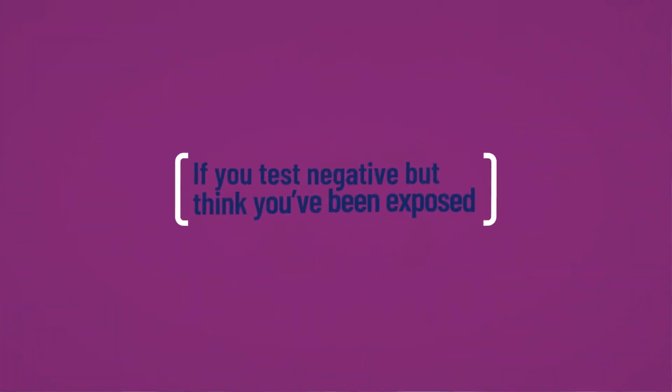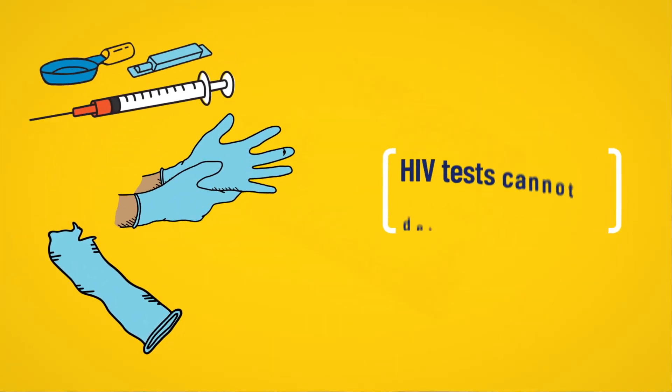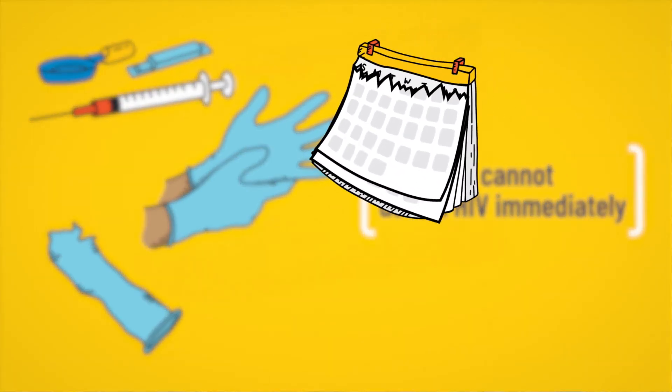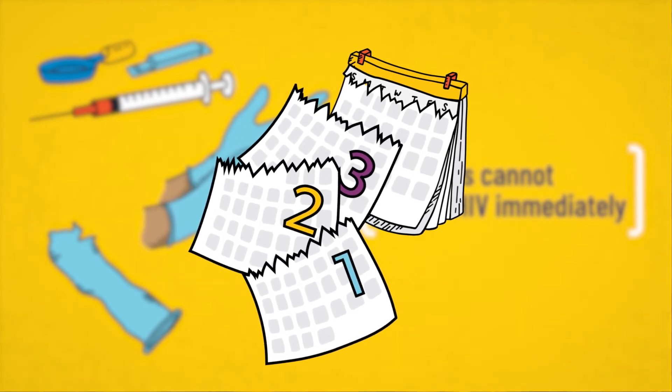If you test negative, but you may have been exposed to HIV in the last three months, ask a health care provider about when you should test again to be sure of the result. Tests can't detect HIV immediately after someone gets it. It can take up to three months after an exposure to HIV for a test to be able to tell if you have HIV.